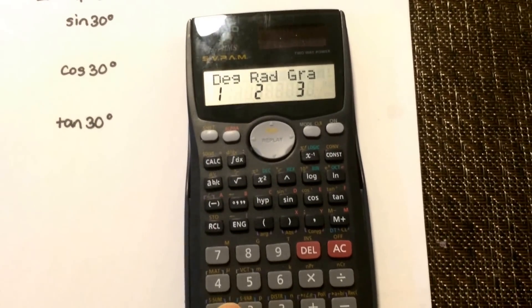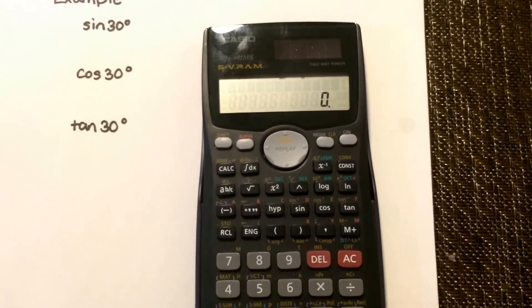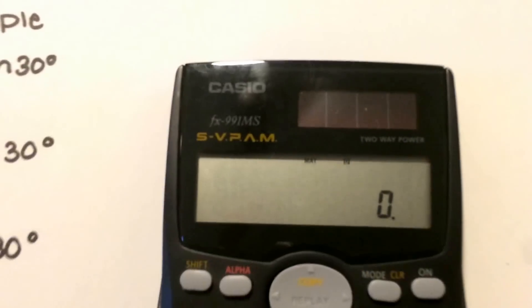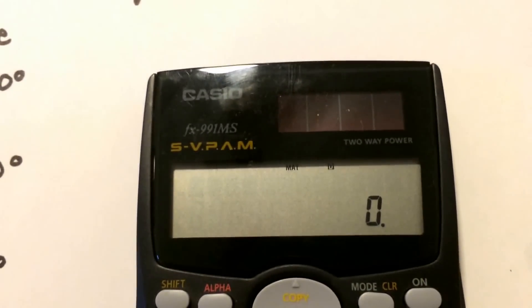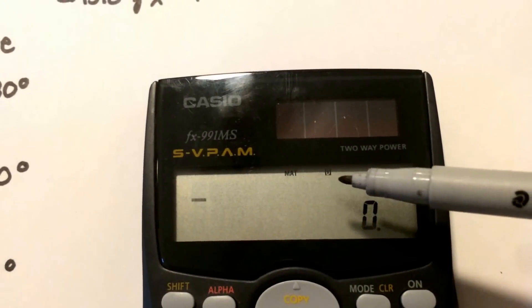So one is usually for degrees, two is if you're working in radians. Select one and you'll see that if you weren't already in it, it's in D over here.